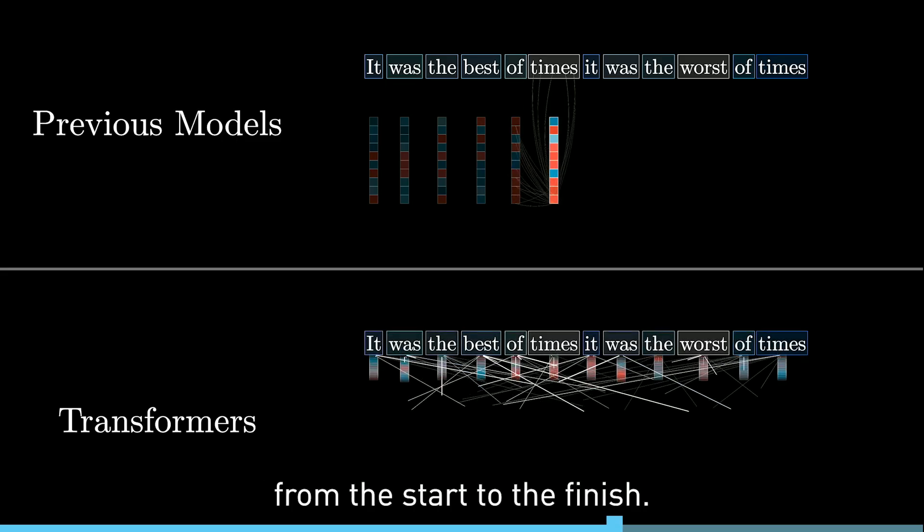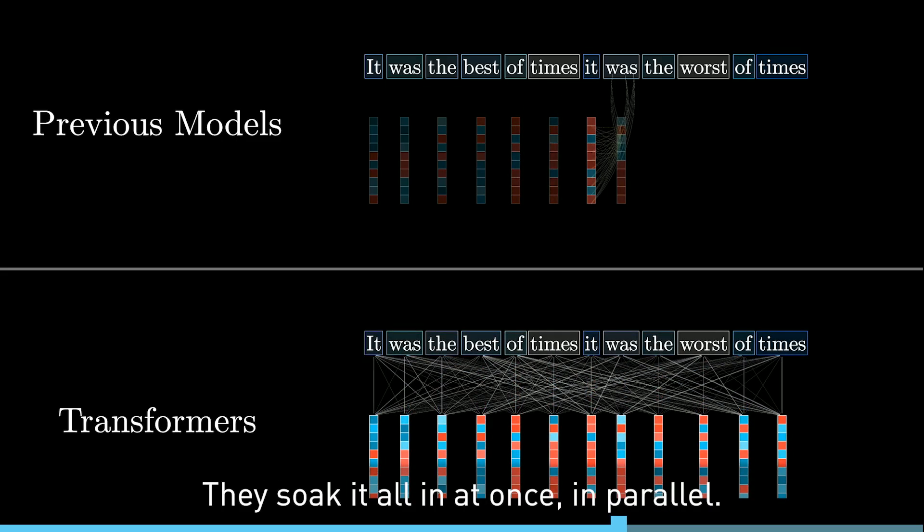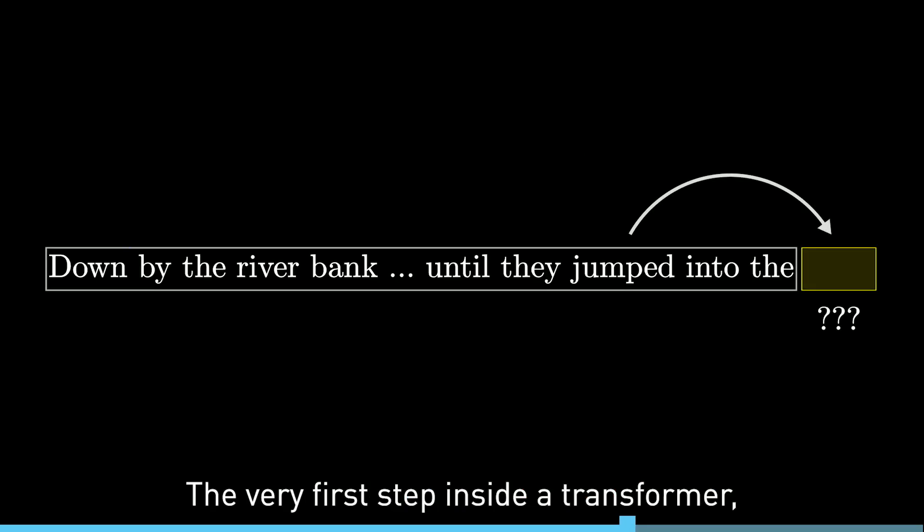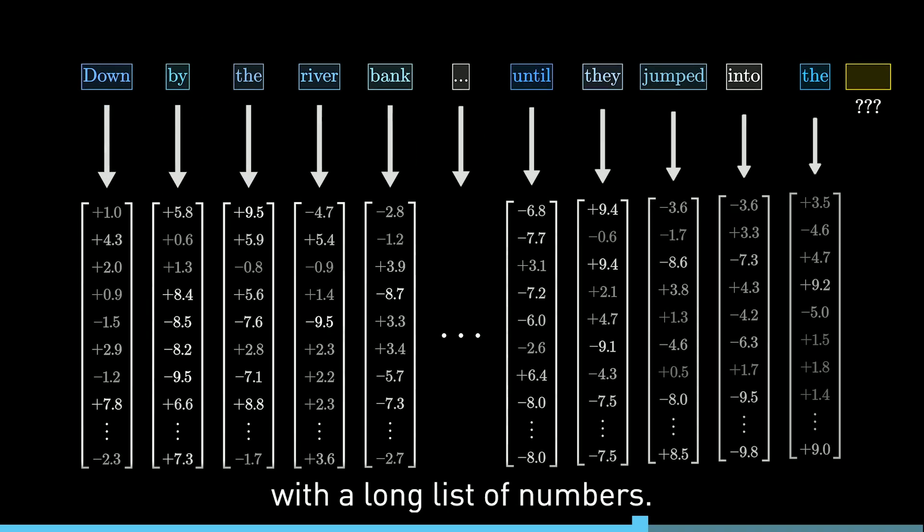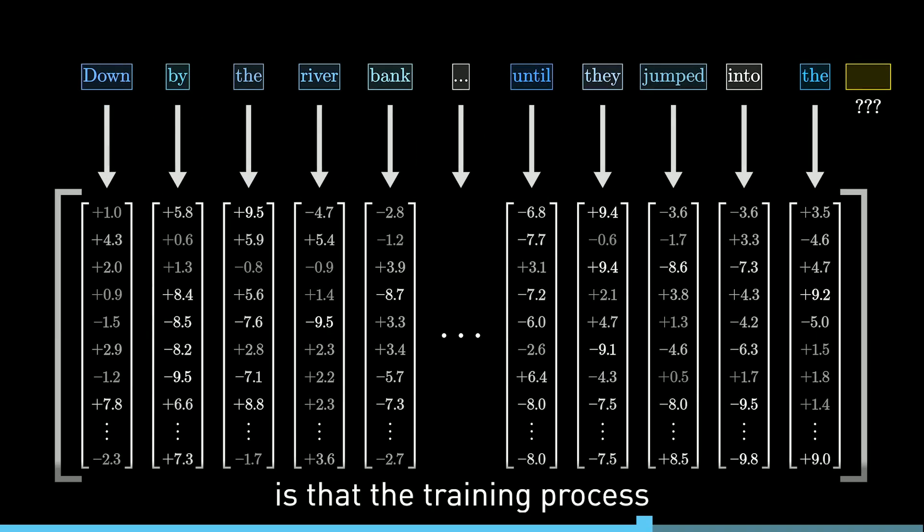Transformers don't read text from the start to the finish, they soak it all in at once, in parallel. The very first step inside a Transformer, and most other language models for that matter, is to associate each word with a long list of numbers. The reason for this is that the training process only works with continuous values, so you have to somehow encode language using numbers, and each of these lists of numbers may somehow encode the meaning of the corresponding word.